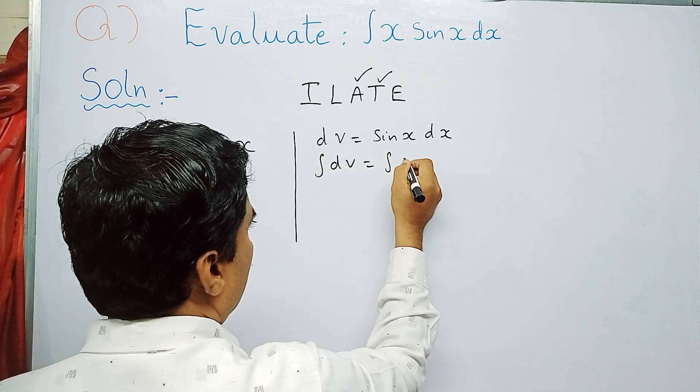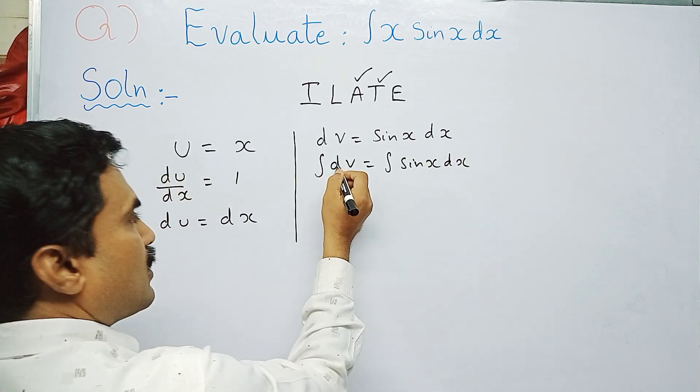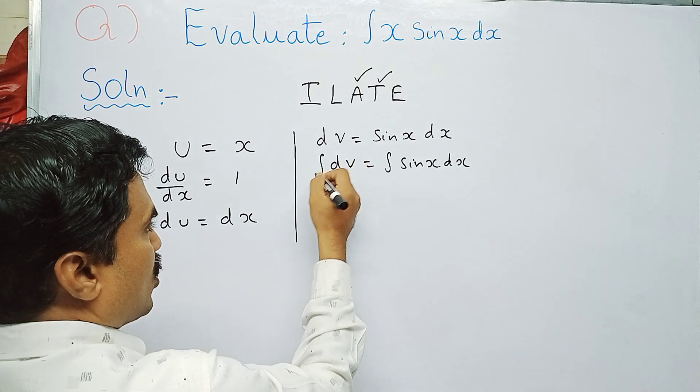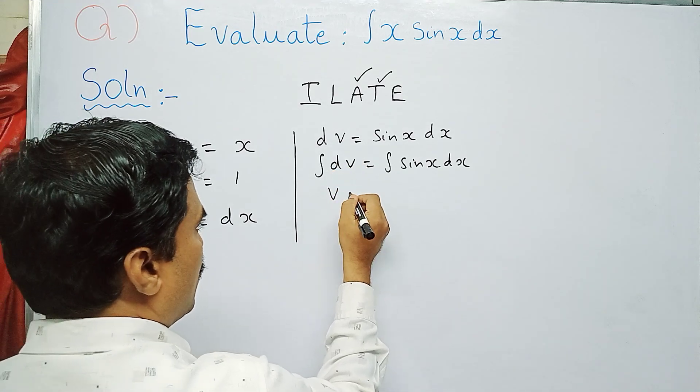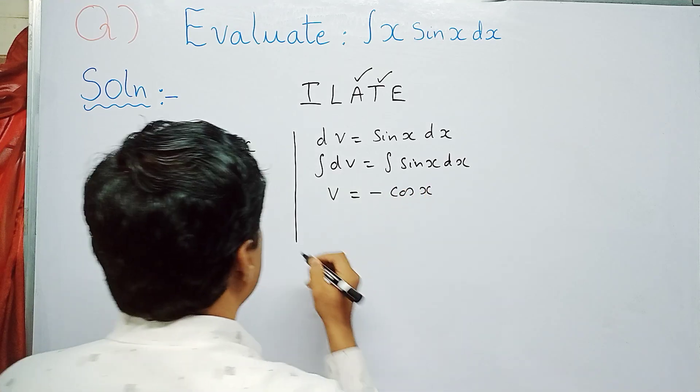Integral dv equals integral sin x dx. Since integral and differentiation are opposites, we get v equals minus cos x, because the integration of sin x dx is minus cos x.